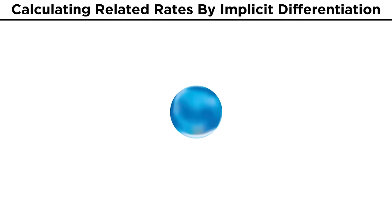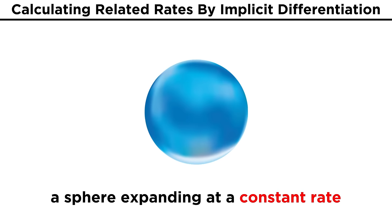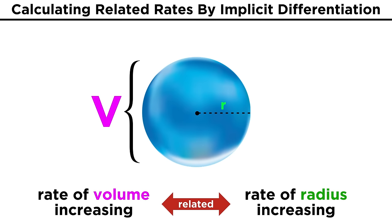Let's say we are inflating a balloon, and let's pretend that the balloon is a perfect sphere, so we essentially have a sphere that is expanding at a constant rate. Now say we want to describe the rate at which the volume of the sphere is increasing, as well as the rate at which the radius of the sphere is increasing. Both of these values are increasing due to the expansion of the balloon, and their rates of increase are related, hence related rates.